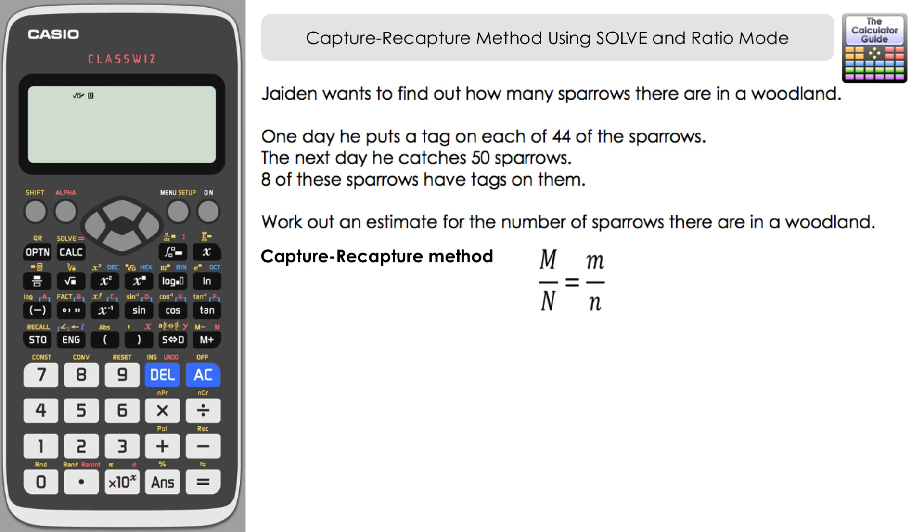It was 8 out of 50, so the n on the bottom, the lowercase n, that's going to be 50 sparrows. Now what's missing is the uppercase N—that is the estimate of the population, and that's what we need to find. Essentially how this works is that we're assuming these are going to be in proportion with each other. So 44 to 8 will be in the same proportion or the same ratio as our unknown total population is to 50.